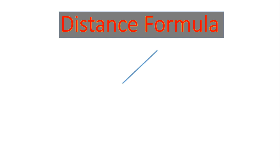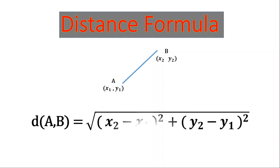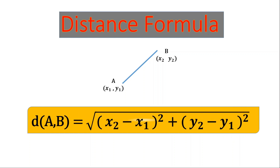So here comes the distance formula. Suppose there are two points, point A (x1, y1) and point B (x2, y2), and we have to find the distance between these two points — that is, we have to find the length of segment AB. The formula for finding the length of segment AB is the square root of (x2 minus x1) squared plus (y2 minus y1) squared. This is the distance formula.